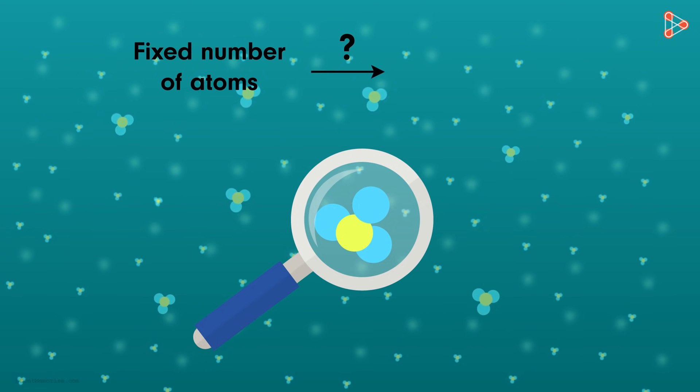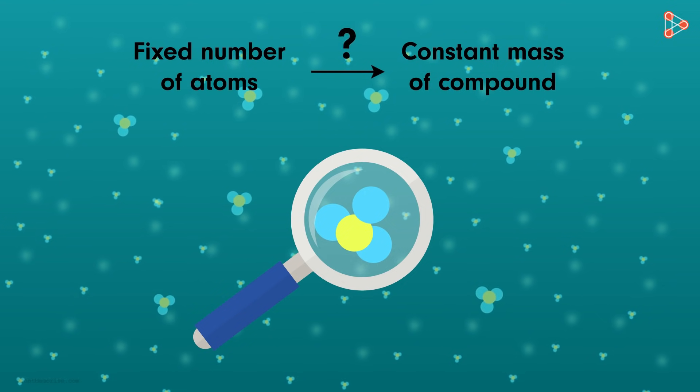So if the number of atoms is fixed, then the mass will also be constant, right? Absolutely!